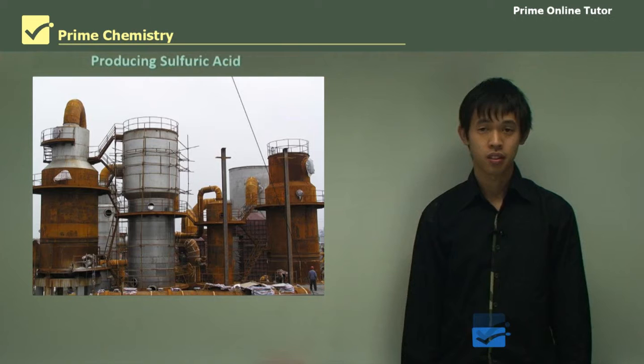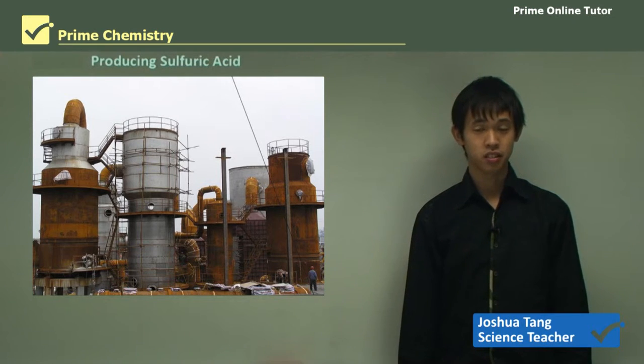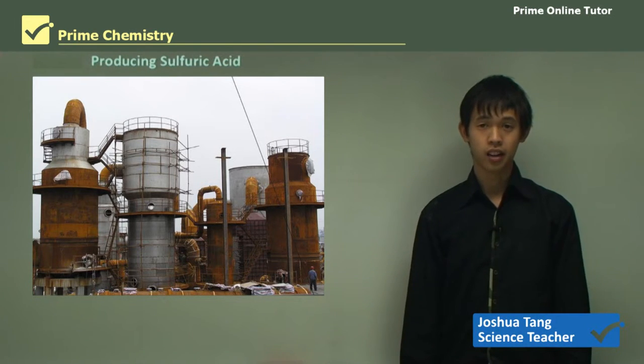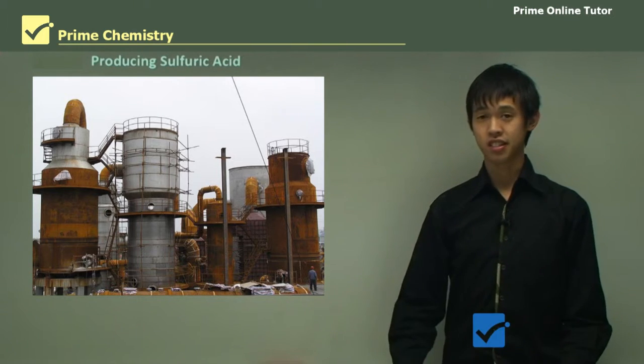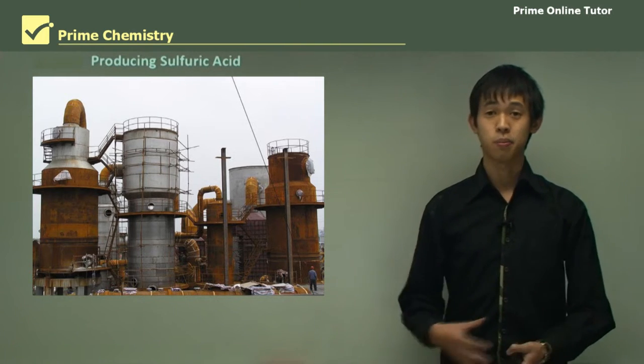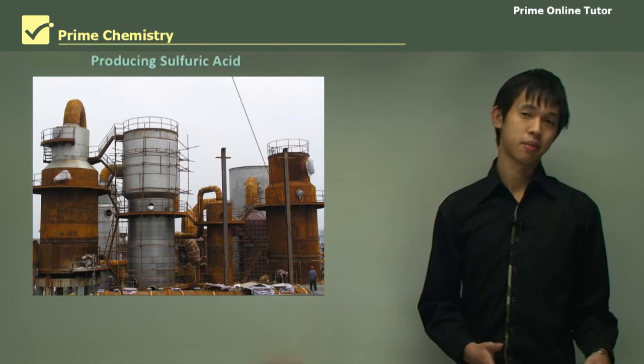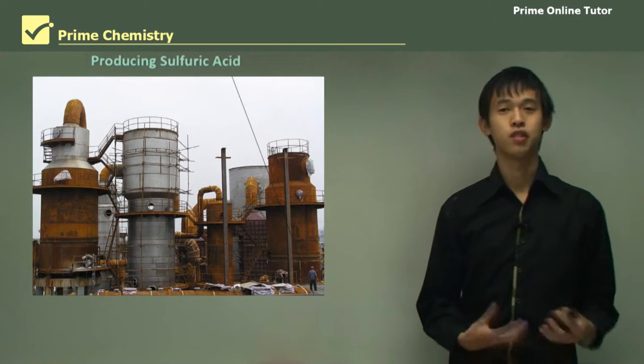Hello everyone and welcome again. Today we'll be talking about the industrial chemistry option and continuing our study of sulfuric acid. In today's lesson we'll be talking about how we actually produce sulfuric acid, whereas in the last lesson we talked about how we get the sulfur to do that.